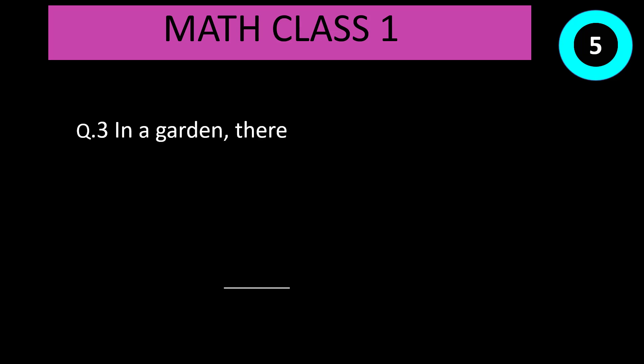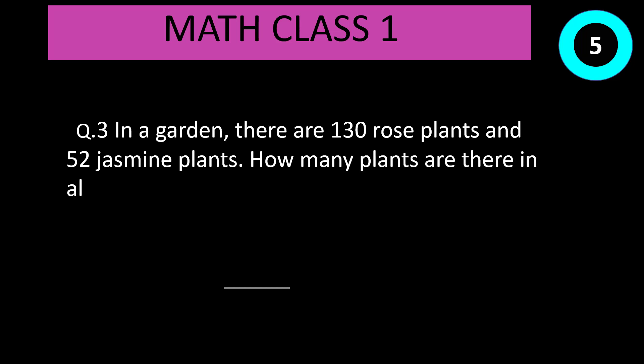Question number 3: In a garden, there are 130 rose plants and 52 jasmine plants. How many plants are there in all? Time start now. Correct answer is 130 plus 52 equal to 182.